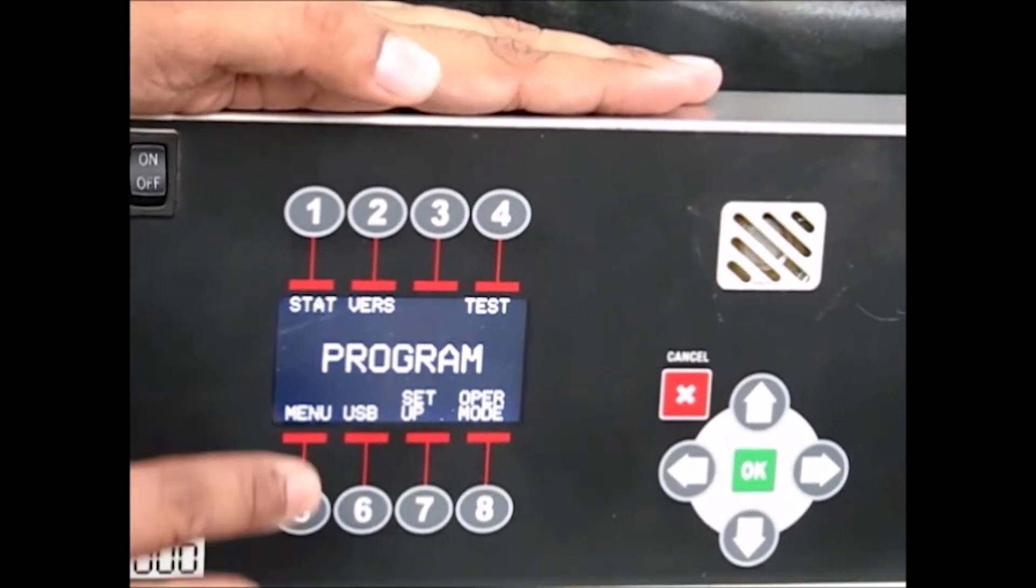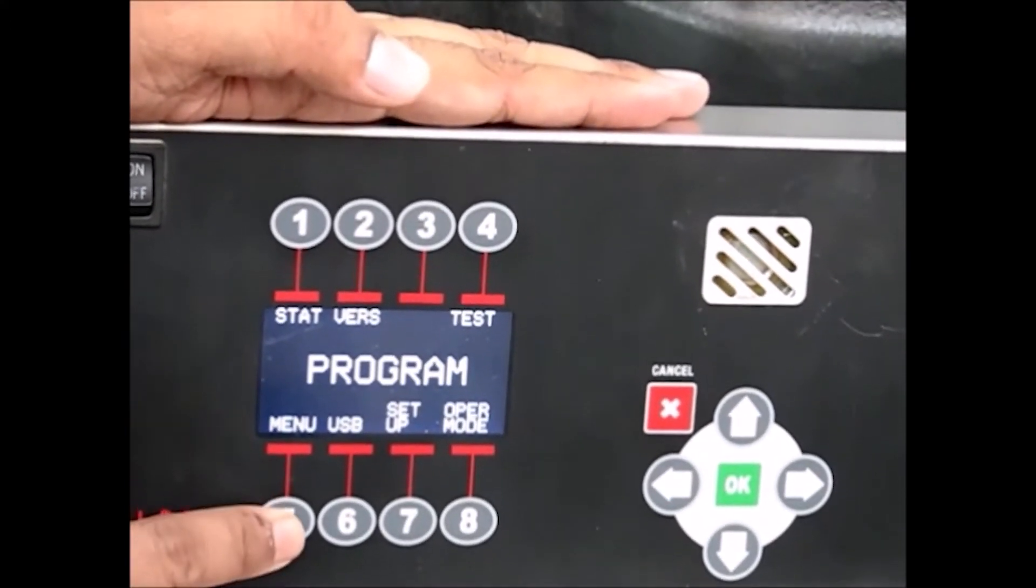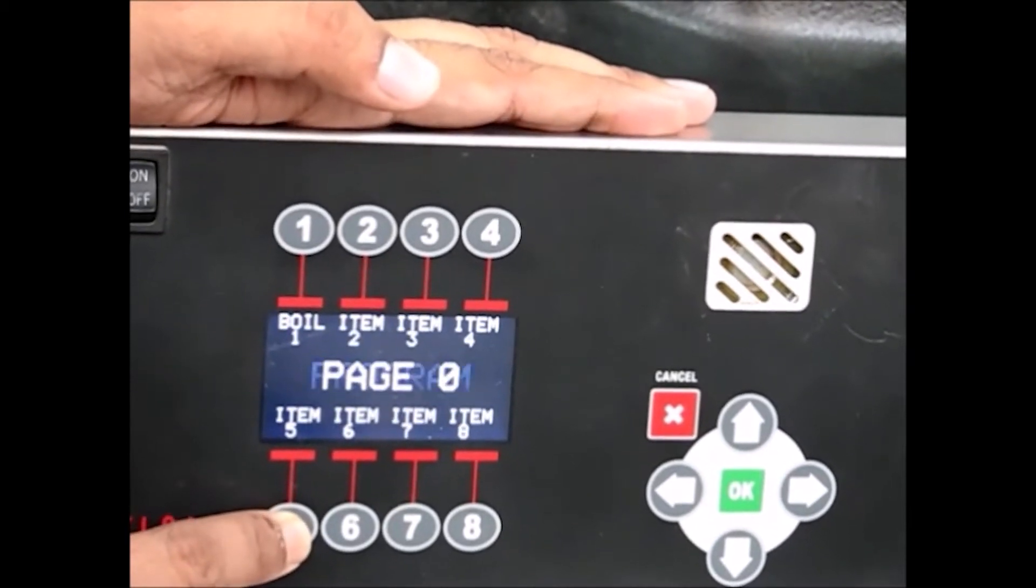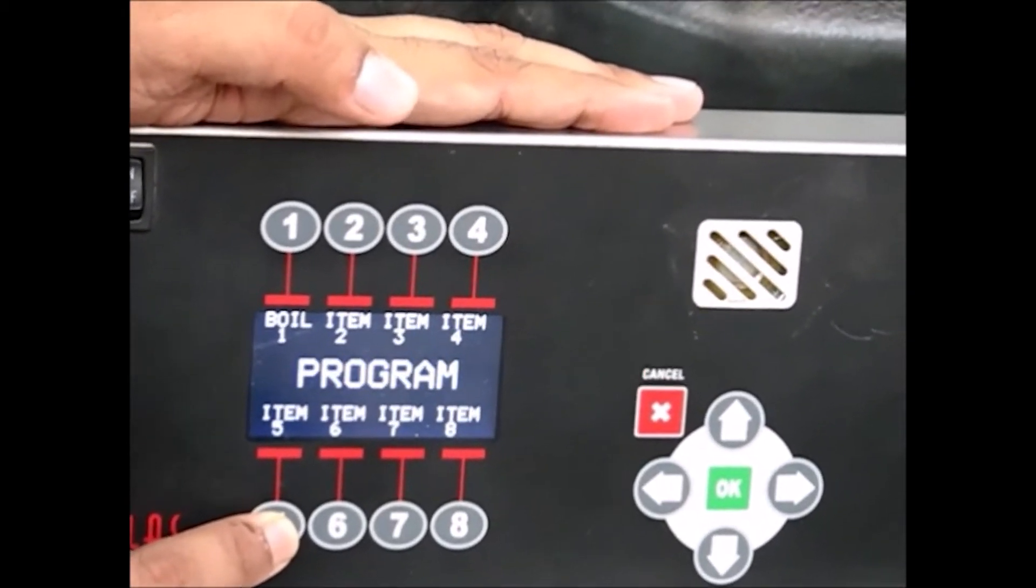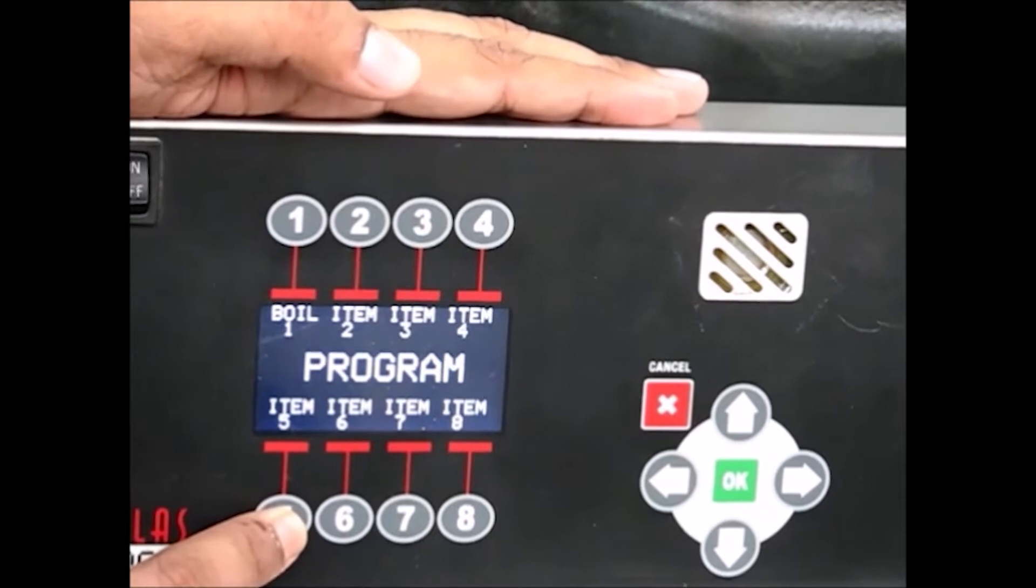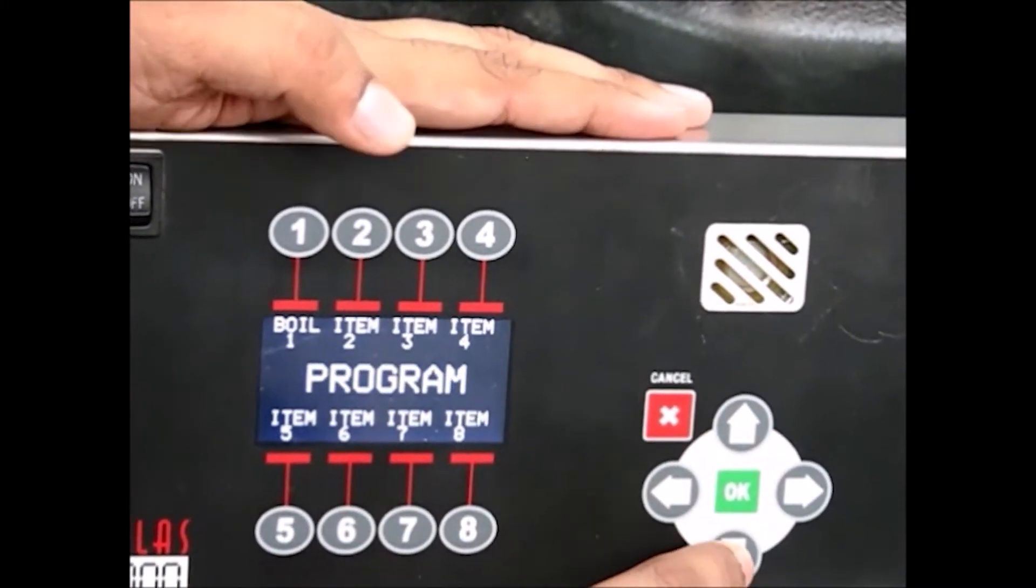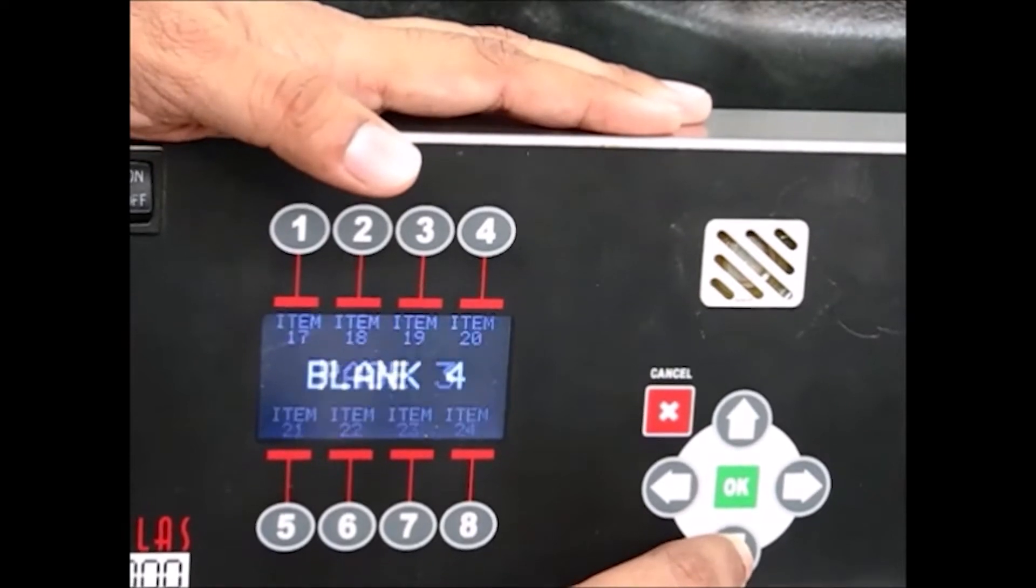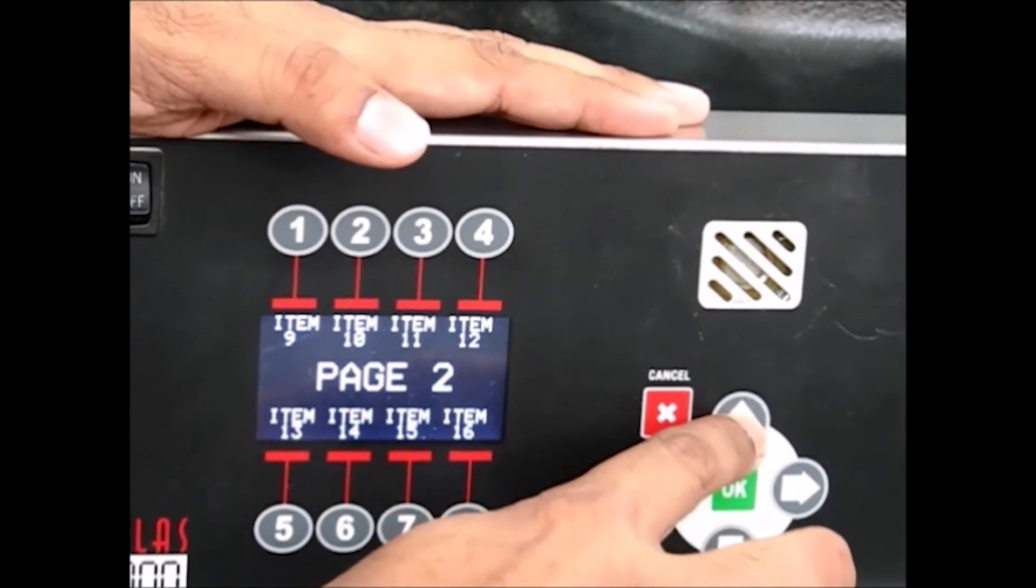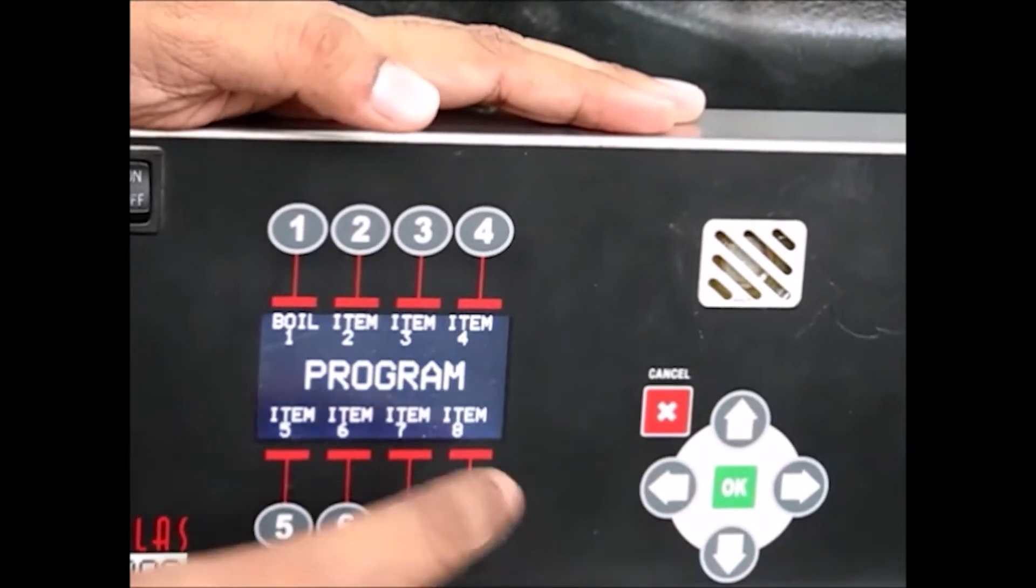To edit a page name, press button 5. Currently, page 0 is selected. To select other pages, press the up or down arrow button. To edit page 0, press OK.